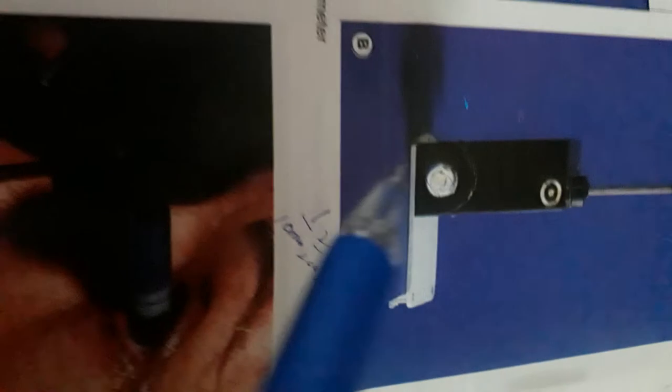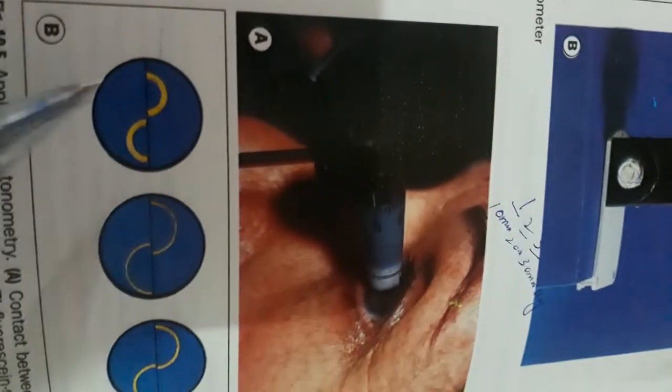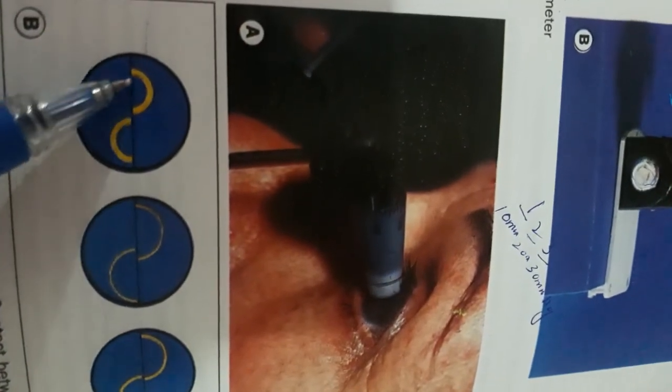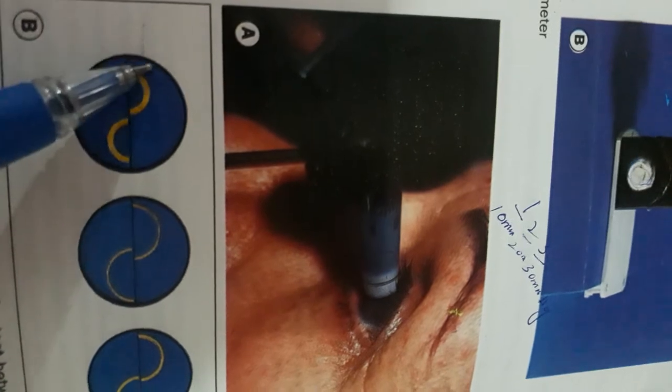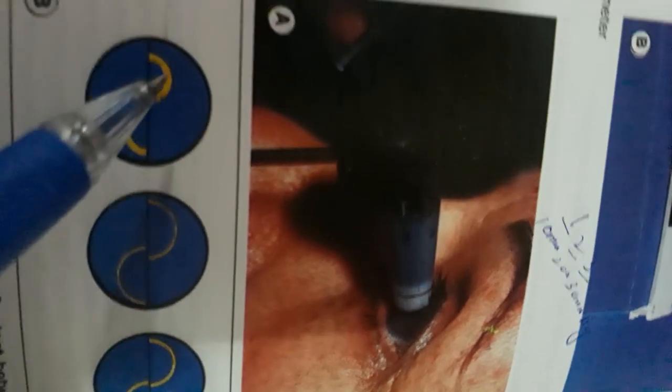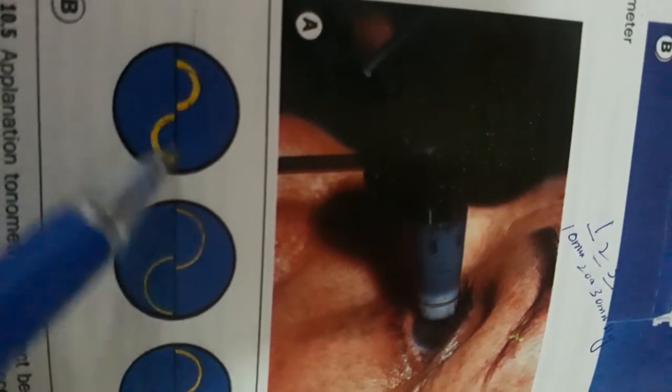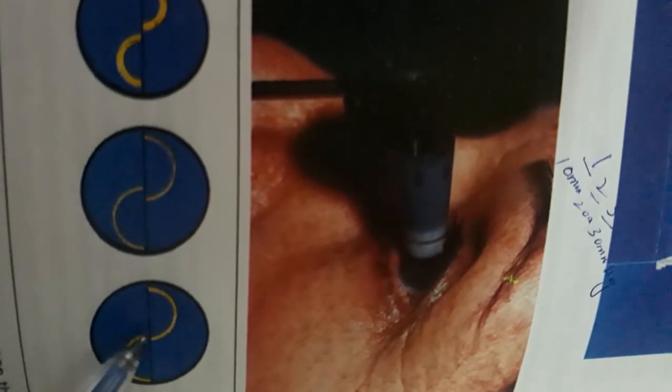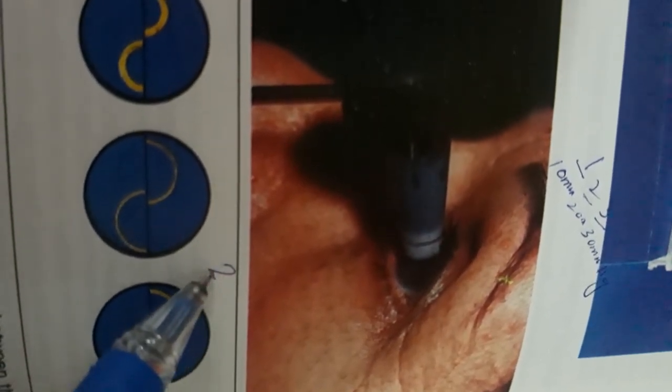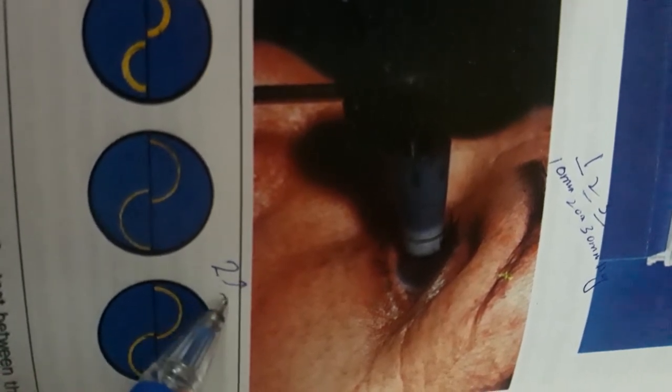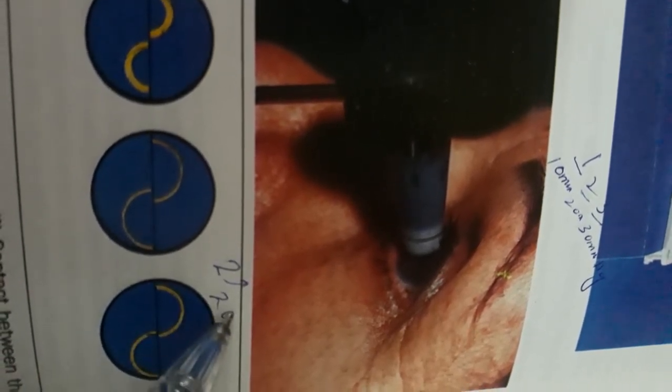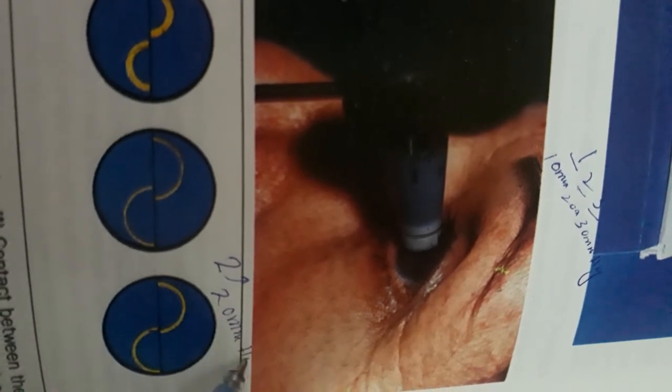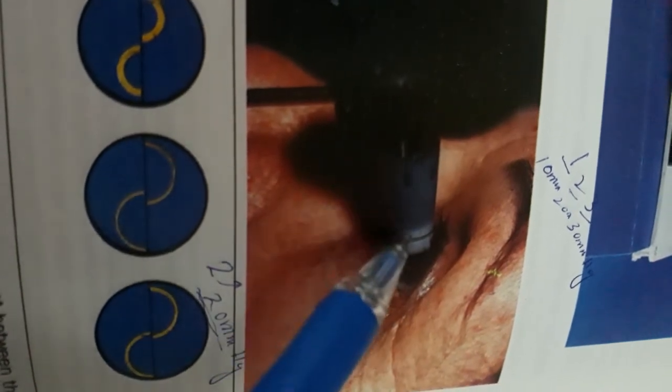When the mires align, if the mires align at 2, which is present on the dial, then IOP will be 20 millimeters Hg. When the Goldmann prism touches the cornea, it touches 3.06 millimeters.